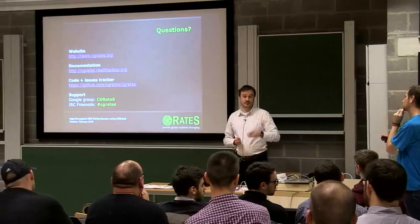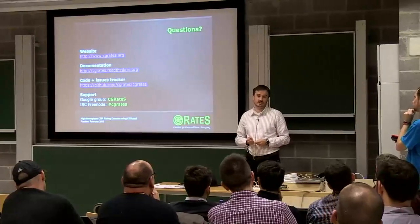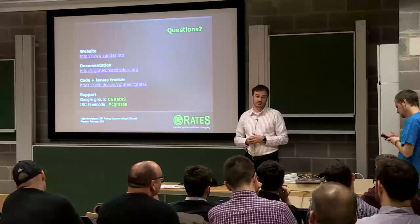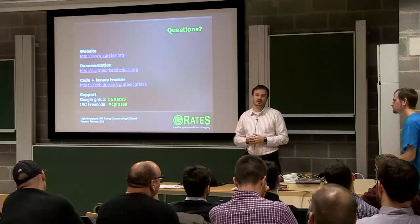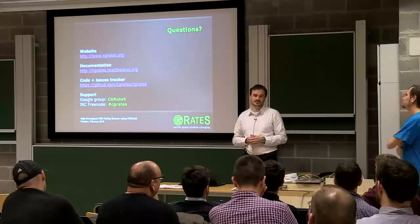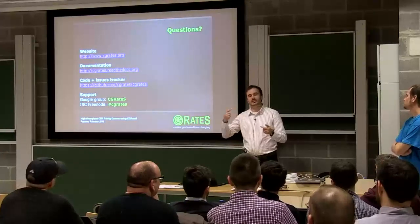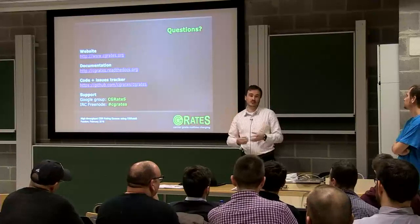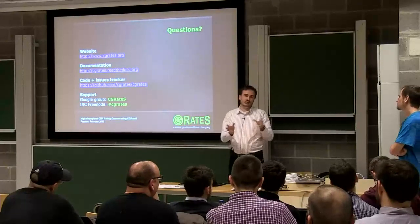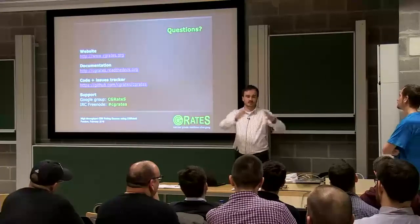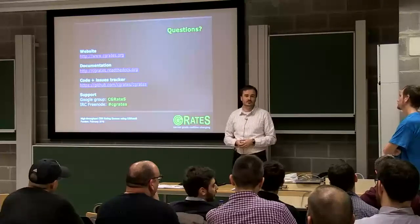Q: What data type do you use for computing charges — floating point or a special type? A: We keep our balances in float, but we round after each operation, because in Go there is no stable decimal type like in Python. So we work with float but apply rounding after every operation. Others use big integers for the same purpose — it's essentially the same solution implemented differently.